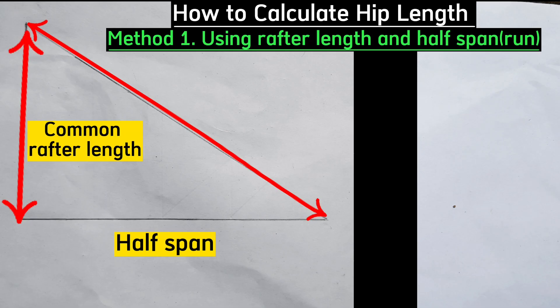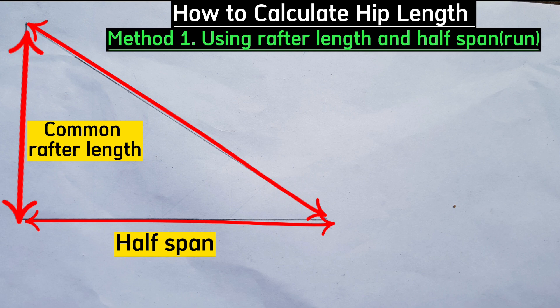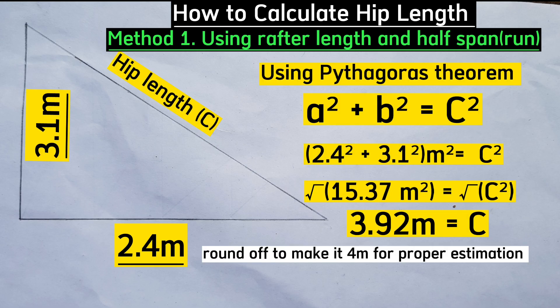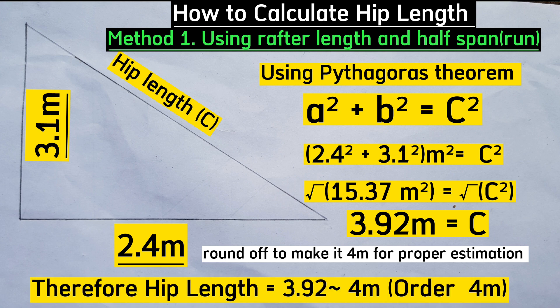When we extract this from the main frame and use Pythagorean theorem, we can find the length of the third side. Assuming our half span is 2.4 meters and the rafter length is 3.1 meters, after using Pythagorean theorem, the length of our hip will be 3.92 meters.